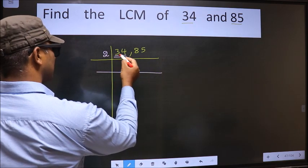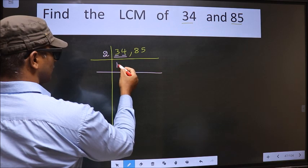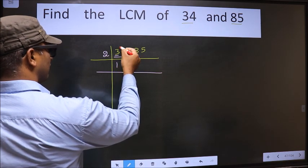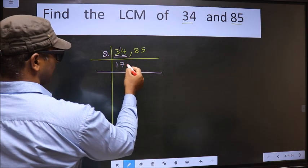The first number 3. A number close to 3 in 2 table is 2. 3 minus 2 is 1, 1 carried forward making it 14. When do we get 14 in 2 table? 2 times 7 is 14.